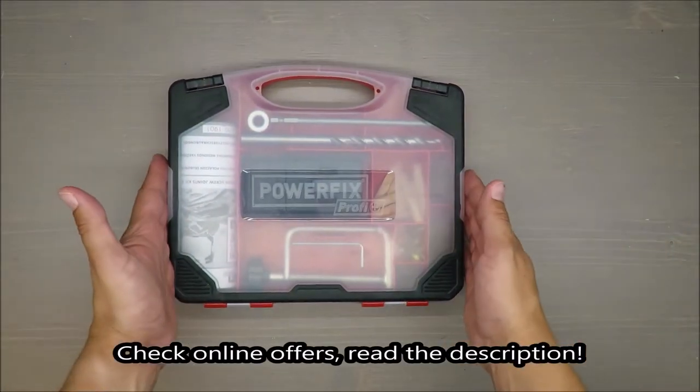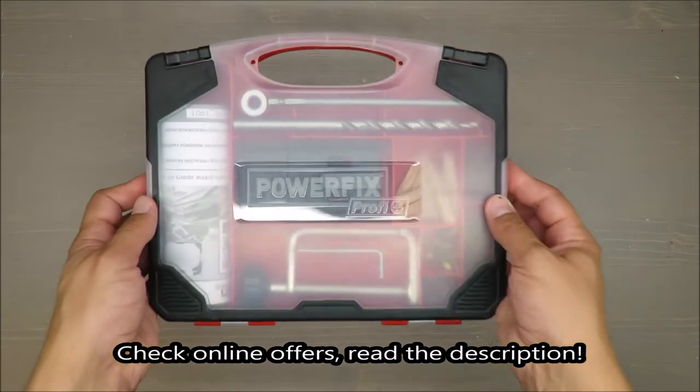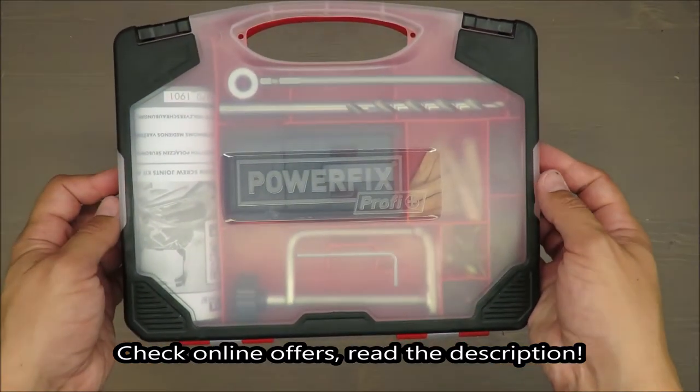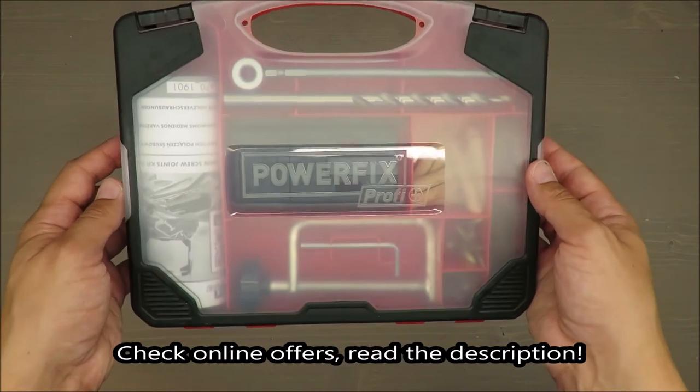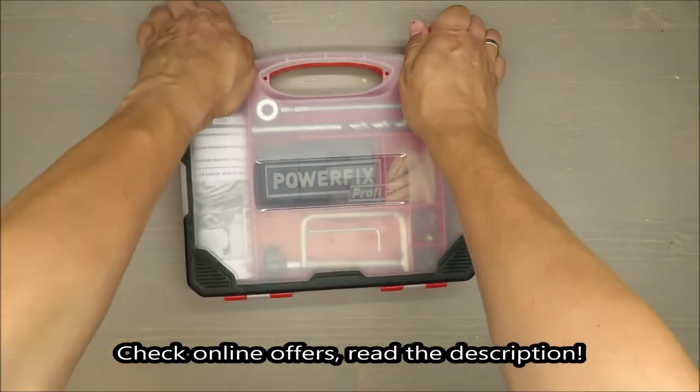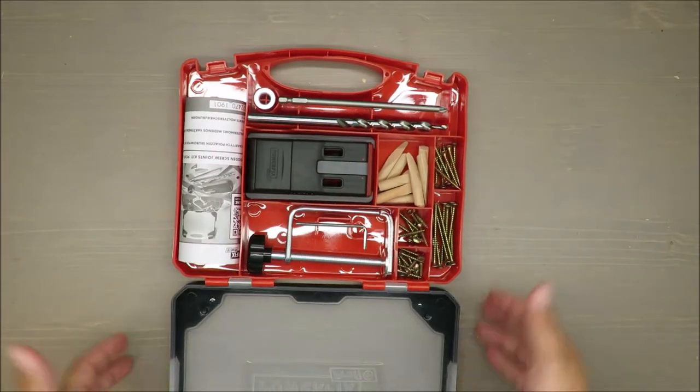Hello everybody, this is Out of the Box Unboxing. In today's episode I'm going to review for you this hidden wooden screw joint kit from PowerFix Profi, available at Lidl. On the beginning, my quick judgment, actually I don't know what to say because I'm not an expert in woodworks.